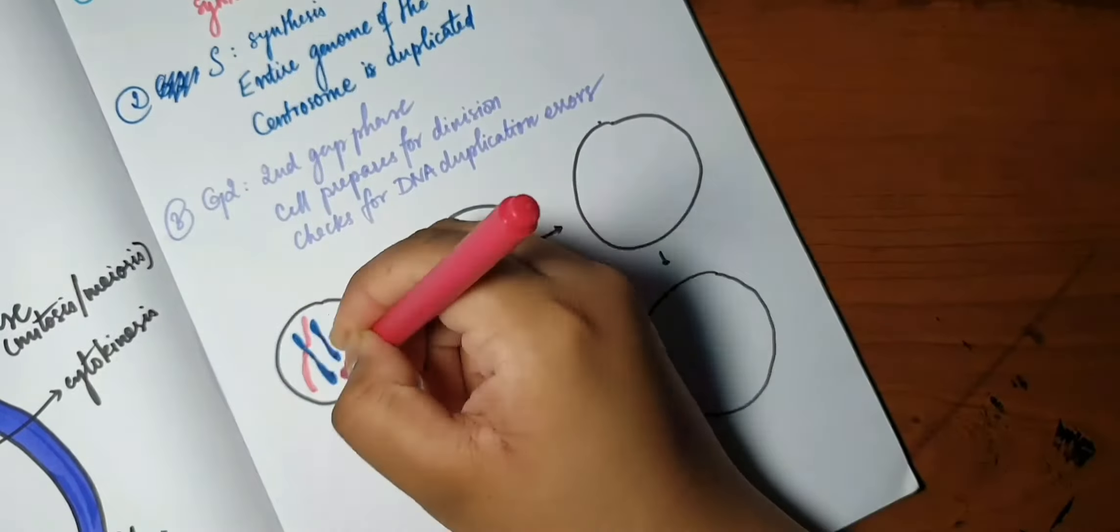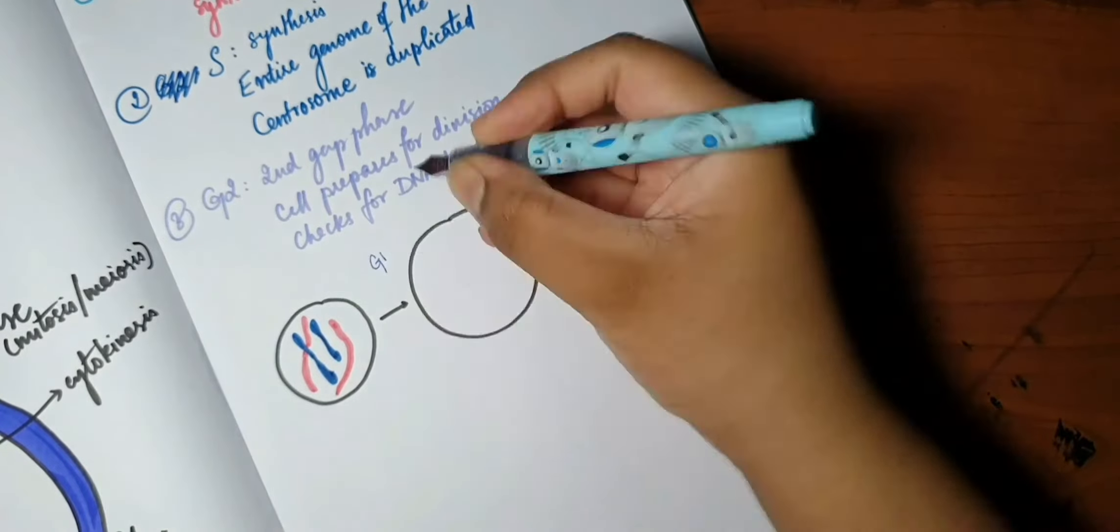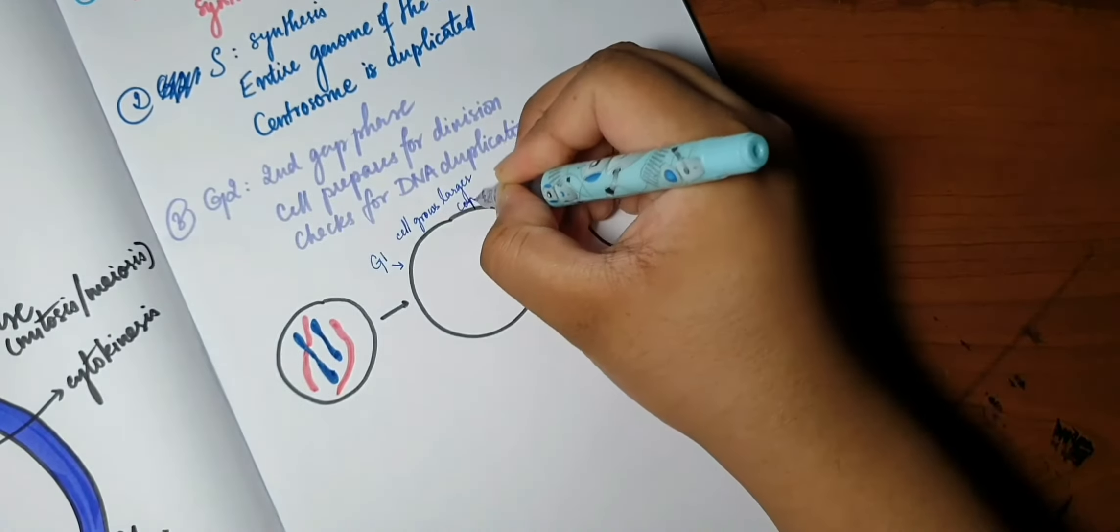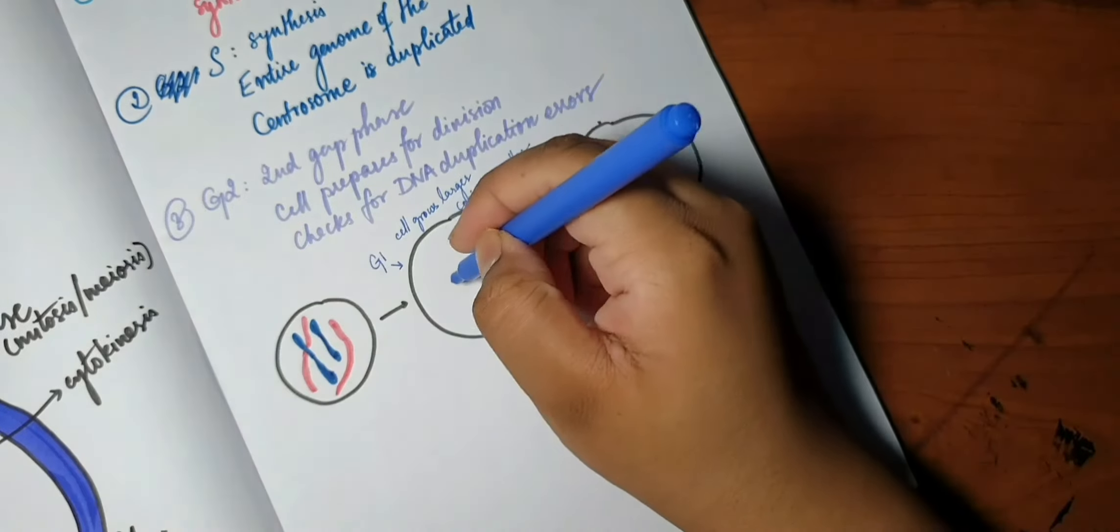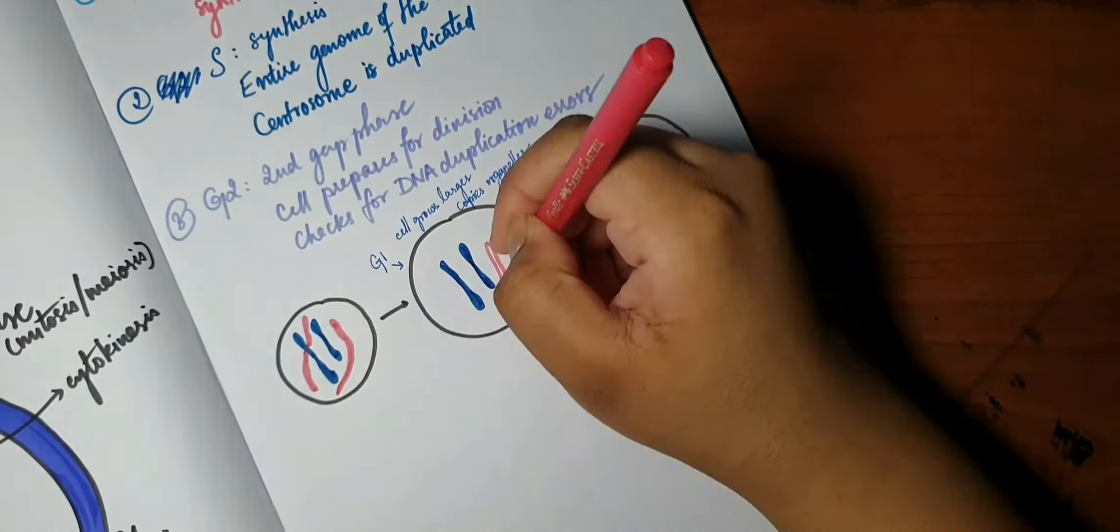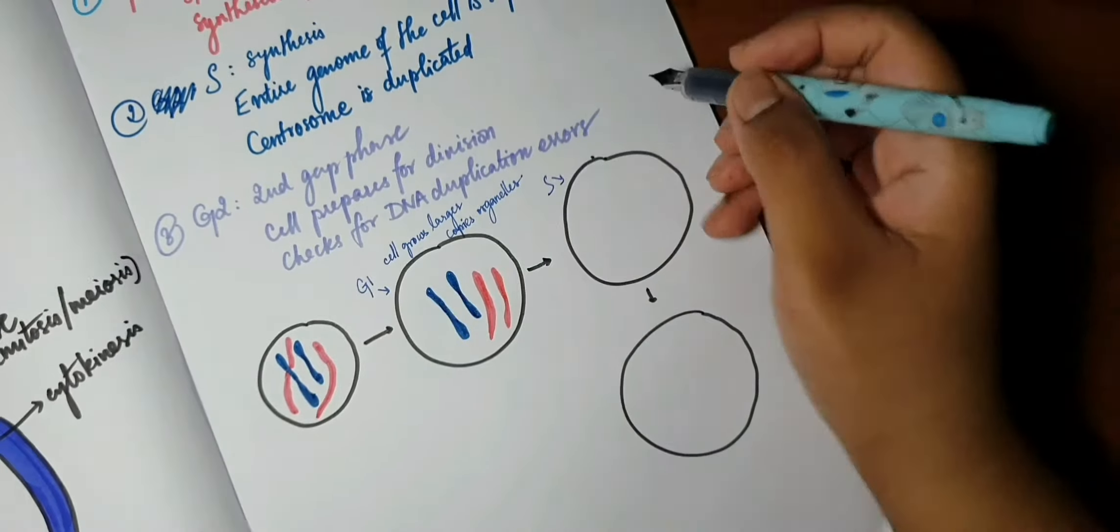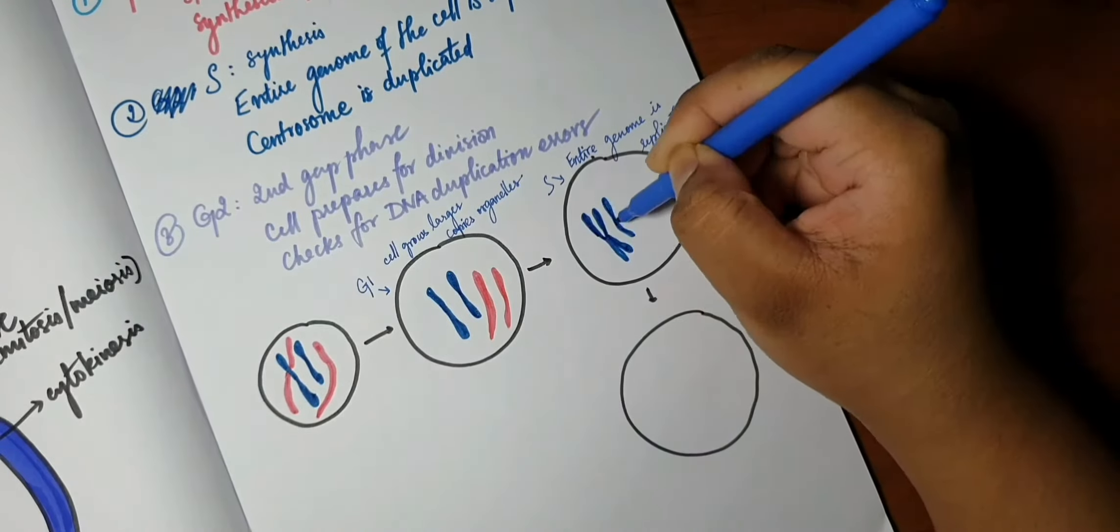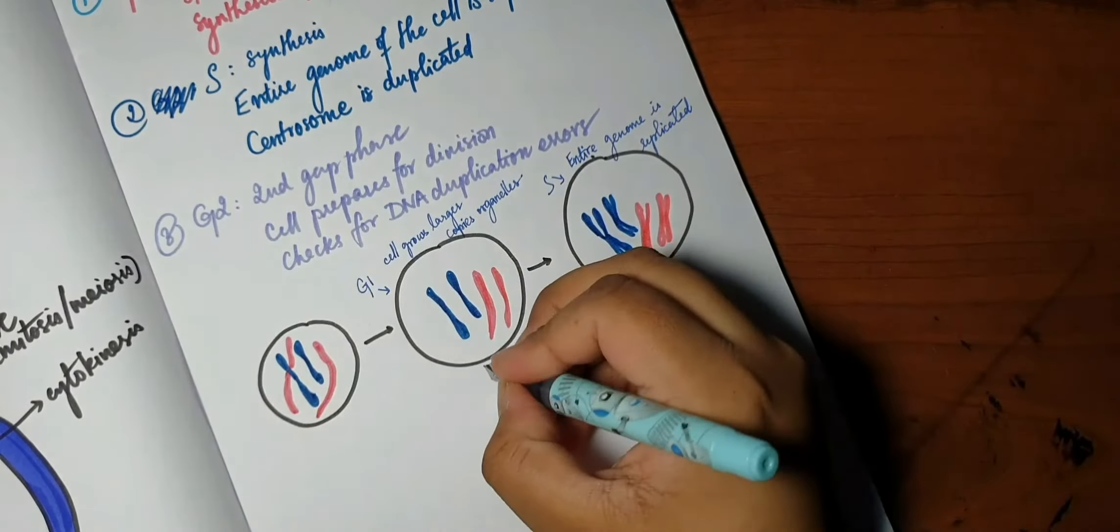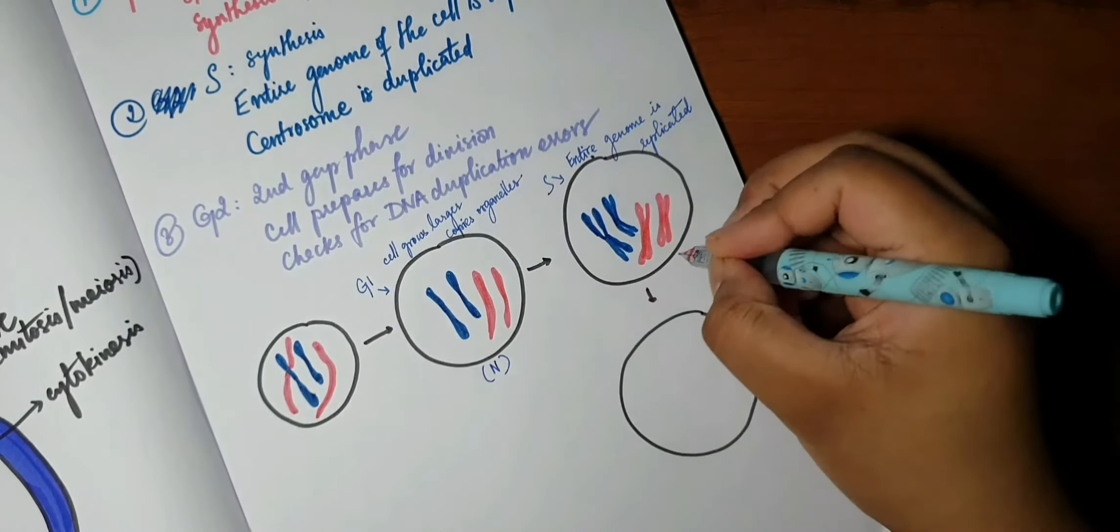Assuming that this is the cell about to be replicated, we have G1, the first phase, where the cell grows larger in size and copies its organelles. So these are the genetic material, the blue and the pink. In S, the entire genome is replicated, so now we have sister chromatids.